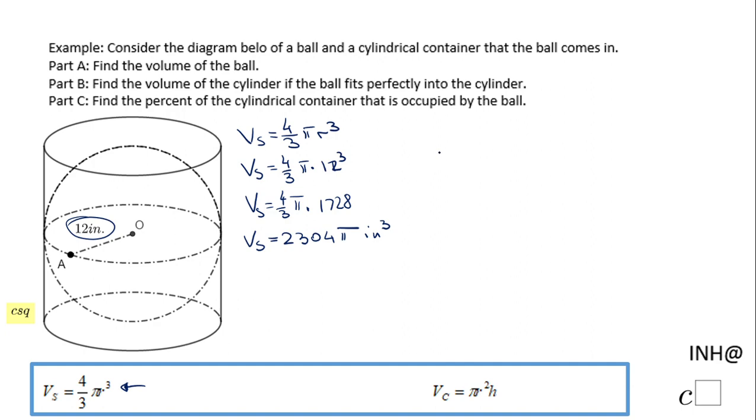This is the volume of the ball. Now we can move to the second part and we're going to find the volume of the cylinder. But read very carefully: the ball fits perfectly into the cylinder. That is very important for two reasons. The radius of the cylinder will be 12, the same radius as the radius of the sphere.